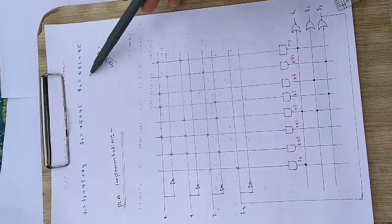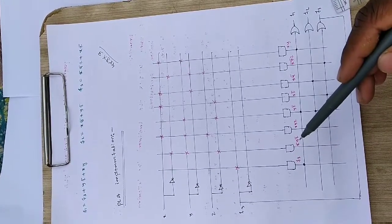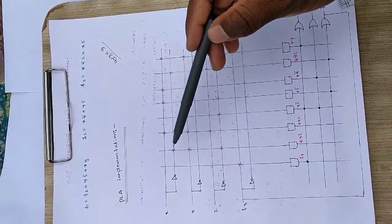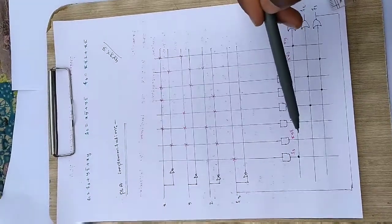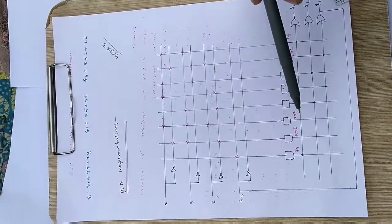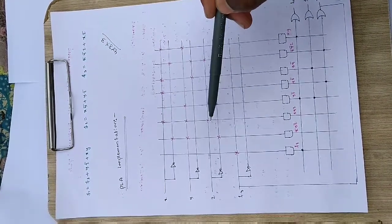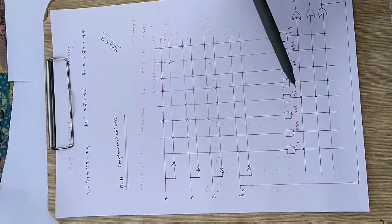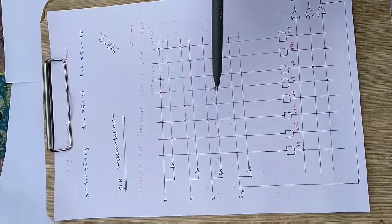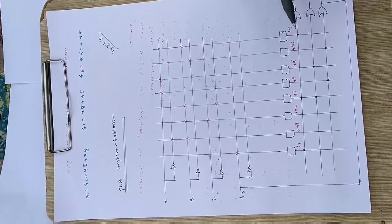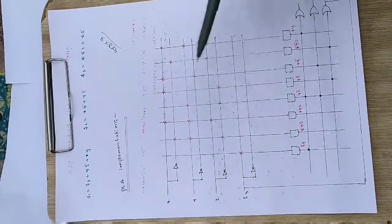For AND gate 3 producing YZ̄, we take Y and Z̄. For gate 4 producing XZ̄, we take X and Z̄. For gate producing XȲ, we take X and Ȳ. For the gate producing XY, we take X and Y. These connections are indicated with crosses at the intersection points on the PLA diagram. Now it's time to make the OR gate connections.